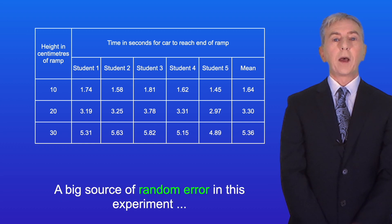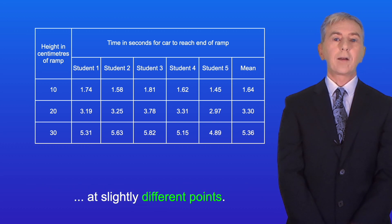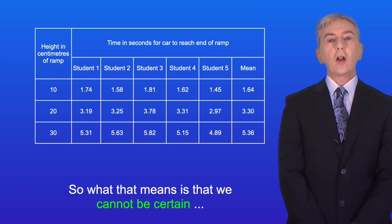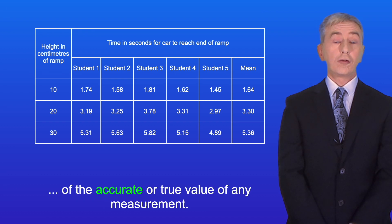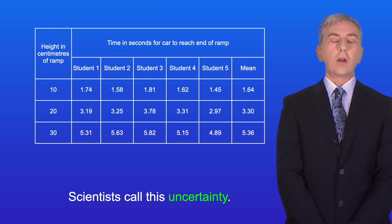A big source of random error in this experiment will be the reaction times of the students. Every student will start the timer and stop the timer at slightly different points. So what that means is that we cannot be certain of the accurate or true value of any measurement. Scientists call this uncertainty.